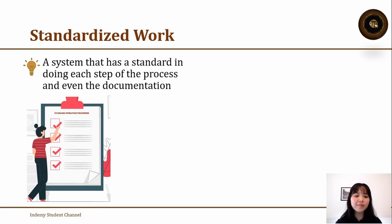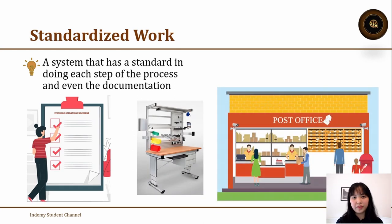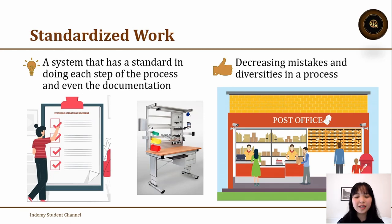For example, this SOP can be applied in the assembly line or it can be applied in a post office. The SOP in the post office could be starting from receiving the package, then choosing the type of the package, for example the fastest delivery time or the normal one like taking two or three days, and then inputting the name, address, and phone number of the senders and recipients, and so on. This standardized work can prevent mistakes from the employees and also reduce the diversities in a process.